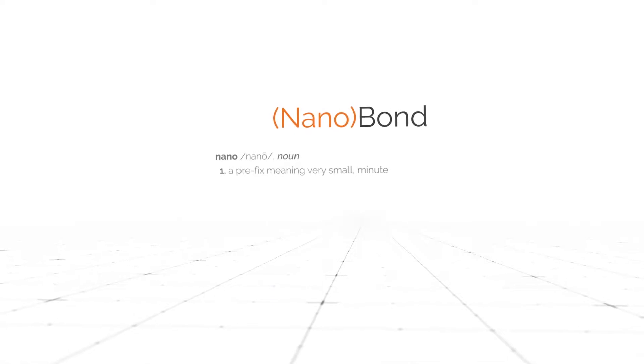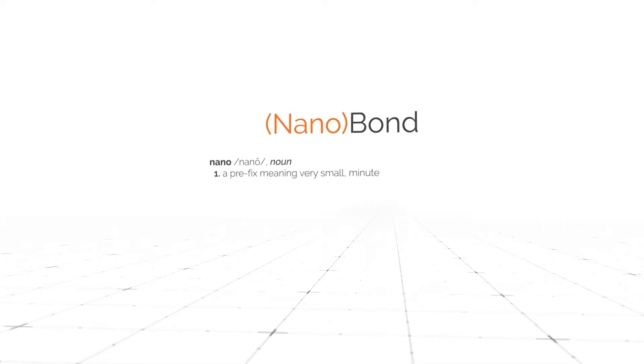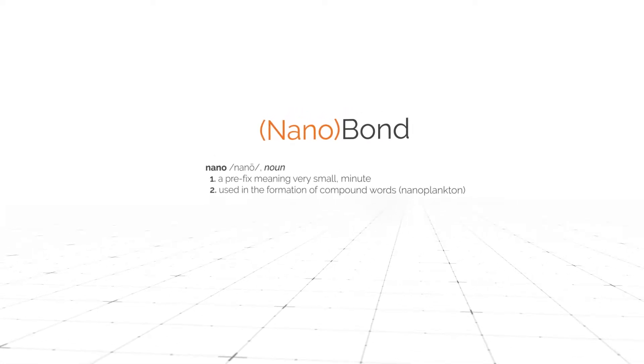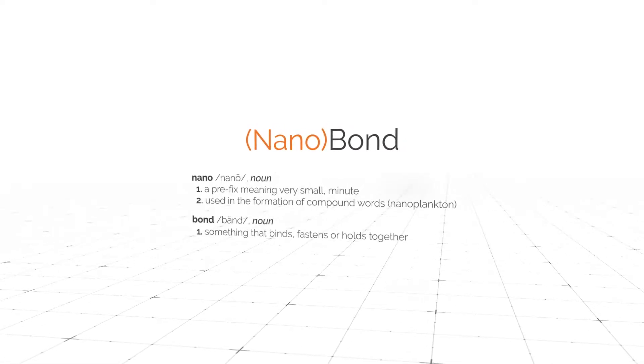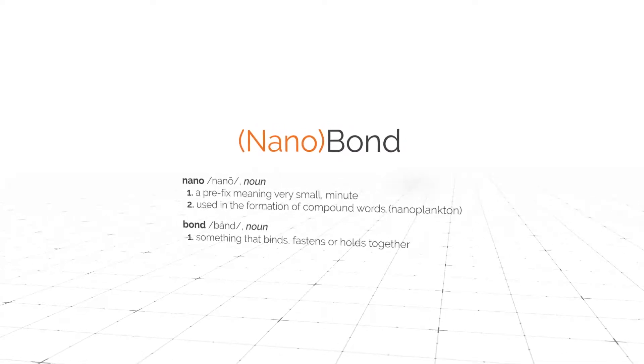Nanobond. Nano, a prefix meaning very small, minute, used in the formation of compound words like nanoplankton. Bond, something that binds, fastens, or holds together.